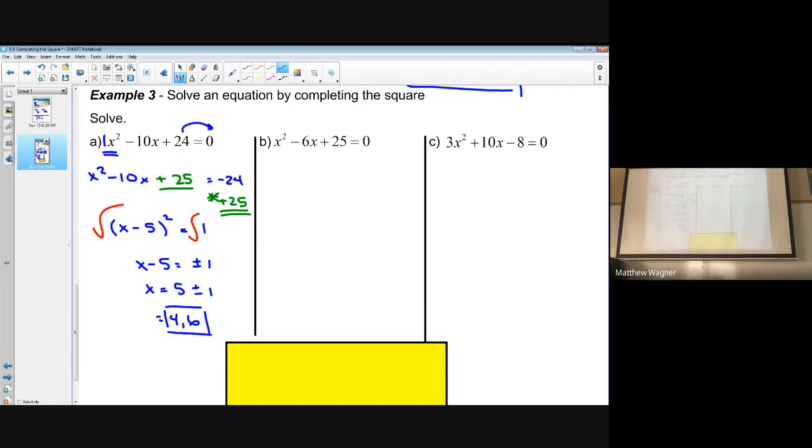Notice at this stage, we got two integer answers. I could have probably factored the initial expression, but the directions did say solved by completing the square. So I do want to show you that completing the square does work universally among all problems, whether they be real, complex, imaginary, irrational, etc. Completing the square is a method that will always work.